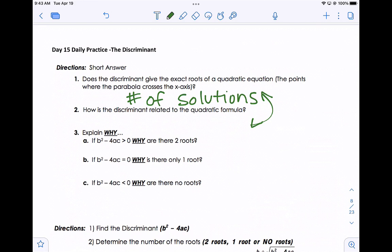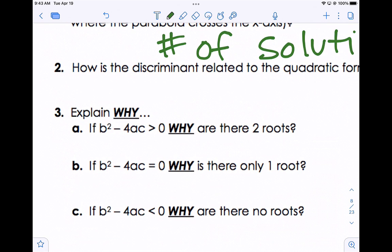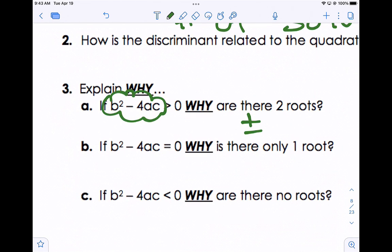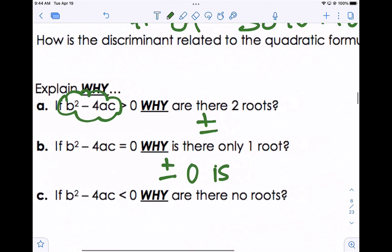Explain why there are two answers when your discriminant is greater than 0. And the reason is, you can add or subtract that number and then divide by 2. Why is there only one answer if it equals 0? Because anything plus or minus 0 is the same number.